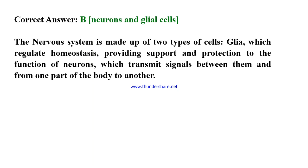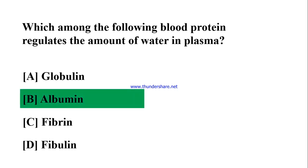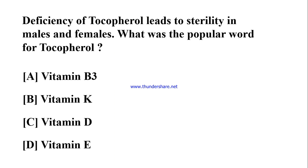Which among the following blood proteins regulates the amount of water in plasma? A) Globulin, B) Albumin, C) Fibrin, D) Fibulin. Correct answer: B) Albumin. Albumin is an energy storage protein and also an important osmoregulator of blood.